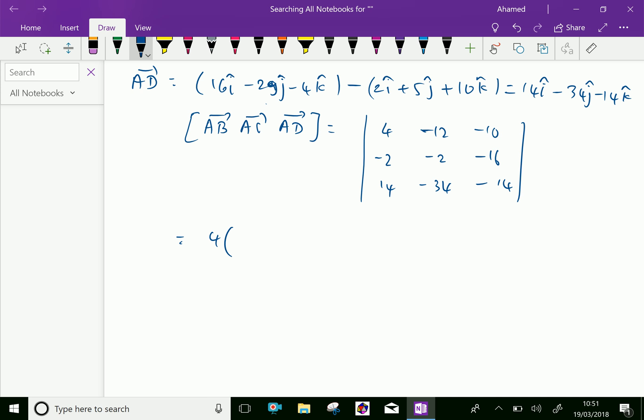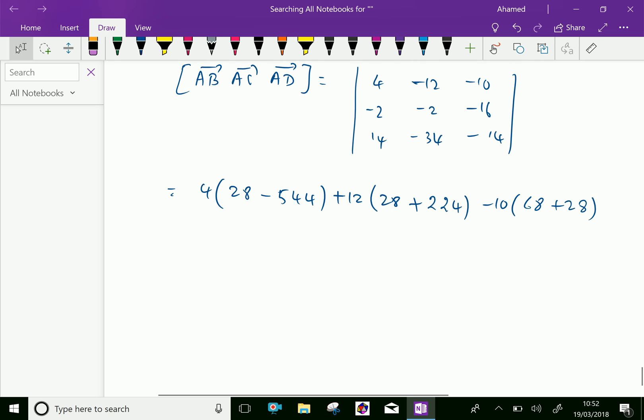We will find the value here. 4 into 2 into minus 14 is 28 minus 544. Then 14 into 16 is 544 minus, plus 12. 2 into minus 14 is 28, then 224. Then third one is minus 10 into 2 into 34 is 68, 68 and 12 into 14, 2 into 14 is 28.